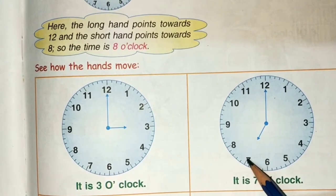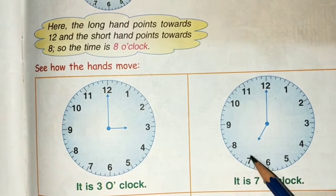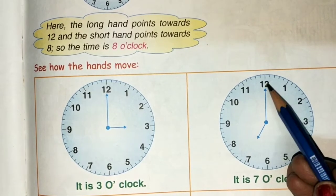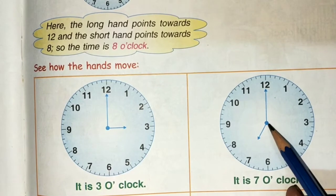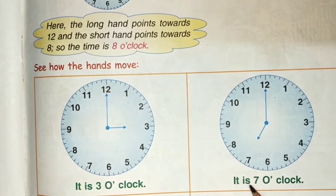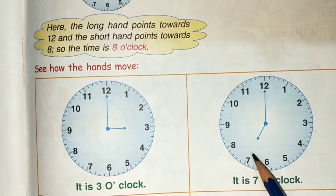Now our hour hand is at 7 and the minute hand is at 12. This is 7 o'clock.